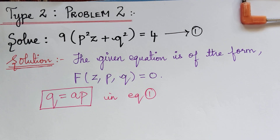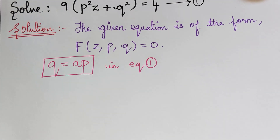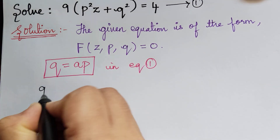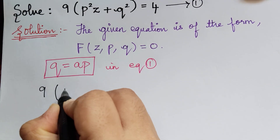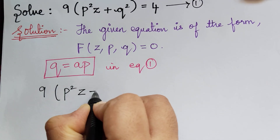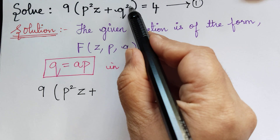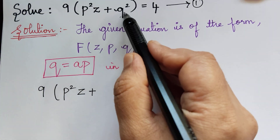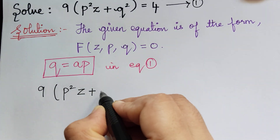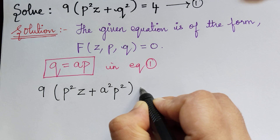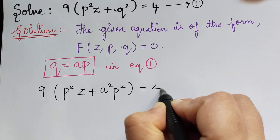When we substitute q equal to ap, what we get is 9 multiplied with p squared times z, plus q squared, where q is ap, so q squared will be a squared p squared, equals 4.